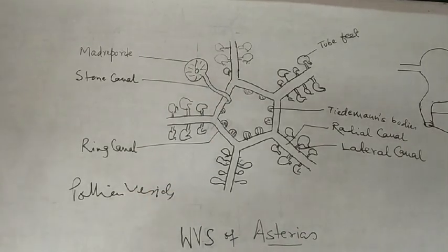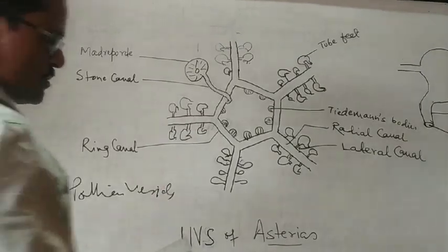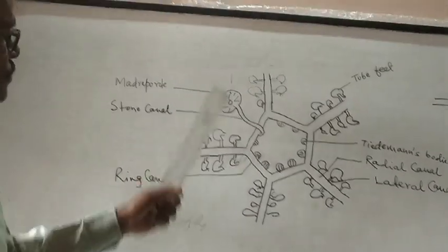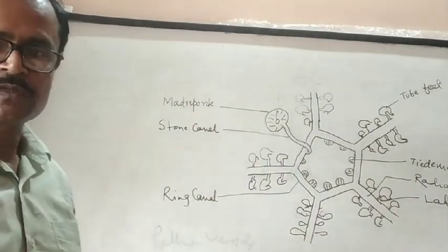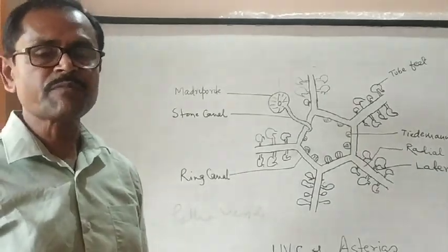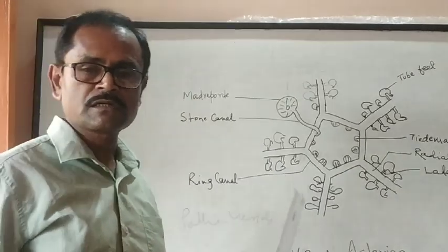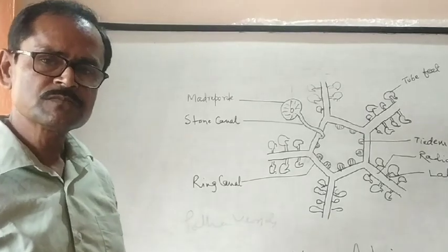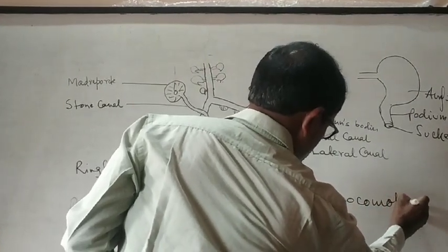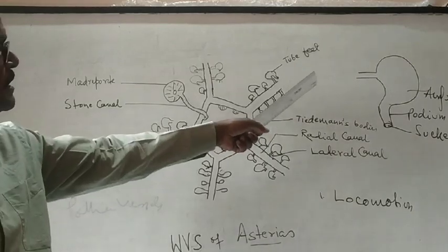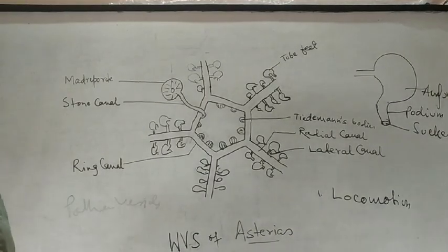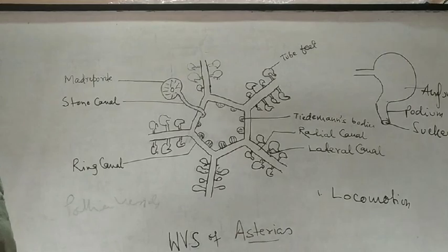Now, see, we will know what is the role of the WVS. Now, water vascular system performs some special functions, which are very important for the metabolic activities of the organism. First, locomotion, which is performed by the tube foot, because it has suckers, by which it can move on the surface, applying the tube feet.